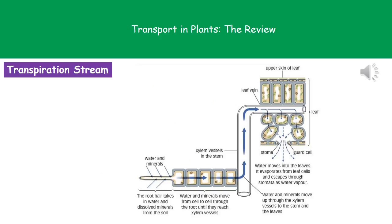Here is a diagram representing the transpiration stream. Starting in the bottom left corner, we can see our root hair cell, identifiable by that big bit that sticks out — its whole purpose being to increase surface area. Water and minerals from the soil go into the root hair cell and are passed from cell to cell until they reach the xylem vessels. Once in the xylem vessels, they are carried up the stem into the leaves, where the water crosses through those cells, through our stomata, and then out into the environment as it evaporates.